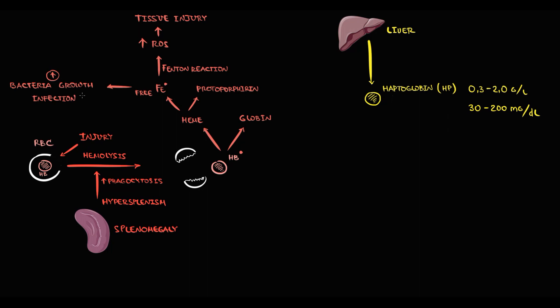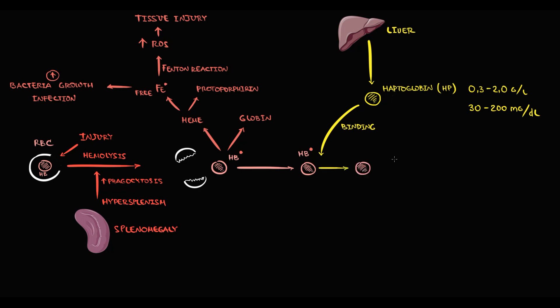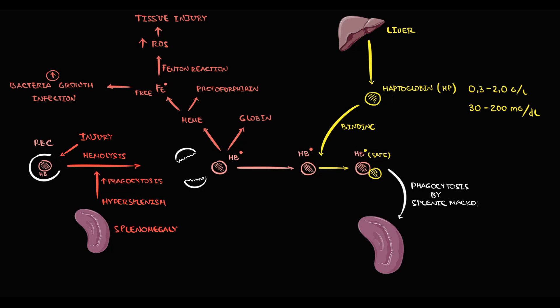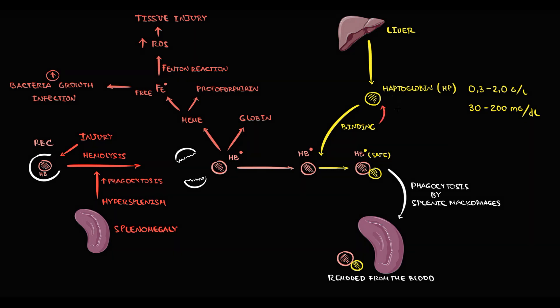That's why we can see haptoglobin act as an acute phase reactant. To prevent these dangerous consequences of hemolysis, we have haptoglobin. Once free hemoglobin is released, haptoglobin binds to hemoglobin with formation of a hemoglobin-haptoglobin complex. In this bound form, hemoglobin becomes a safe substance. The hemoglobin-haptoglobin complex then undergoes phagocytosis by splenic macrophages, removing both free hemoglobin and haptoglobin from the blood. Because the spleen removes not only free hemoglobin but also haptoglobin, the level of haptoglobin in the blood decreases.